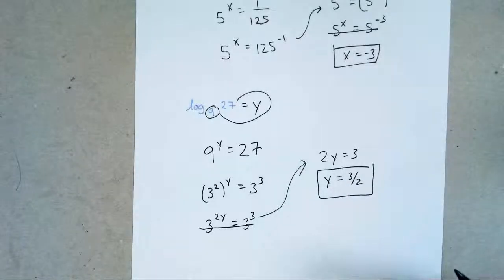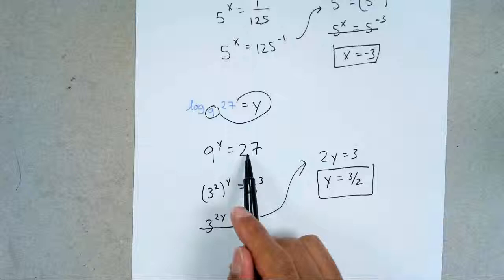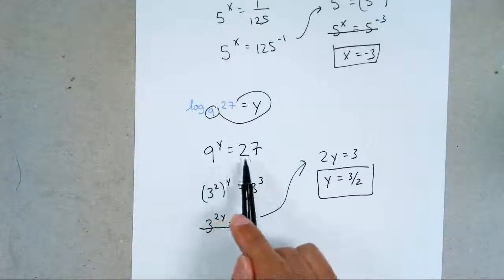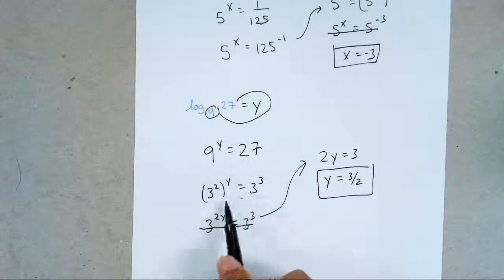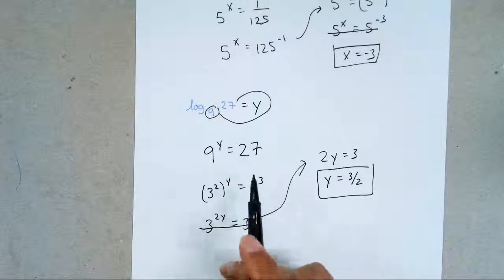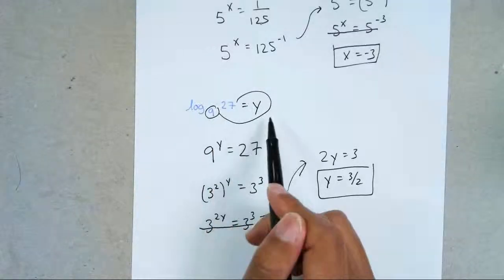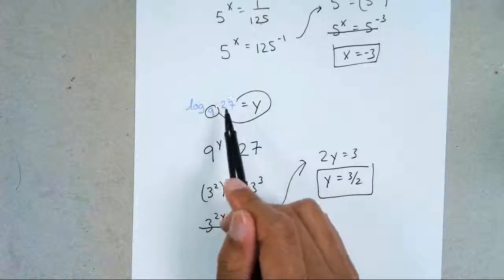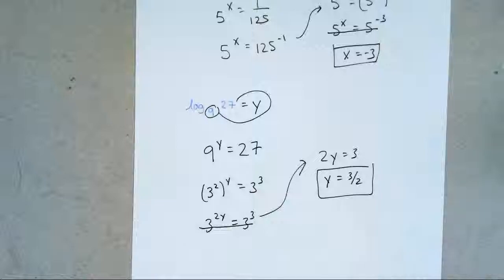So sometimes you'll have a problem where you can't bring down just one number — you have to bring down both numbers, and that's fine. Change both bases to a common base they share, but remember: equal it to a variable, go around, and then work it out. Hope this helps. Thanks for watching.